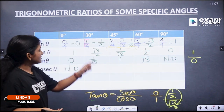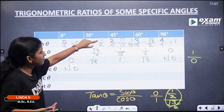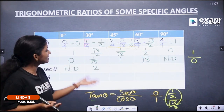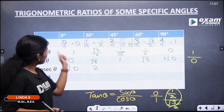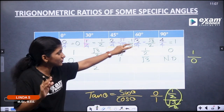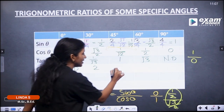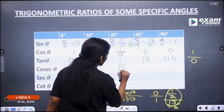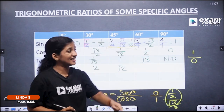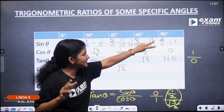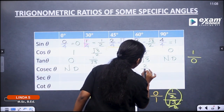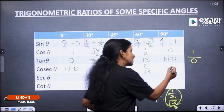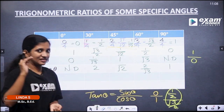Next, cosec values. Cosec 30°: sin 30° = 1/2, so cosec 30° is the reciprocal = 2. Cosec 45°: sin 45° = 1/√2, so cosec 45° = √2. Cosec 60°: sin 60° = √3/2, so cosec 60° = 2/√3. Cosec 90°: sin 90° = 1, so cosec 90° = 1.